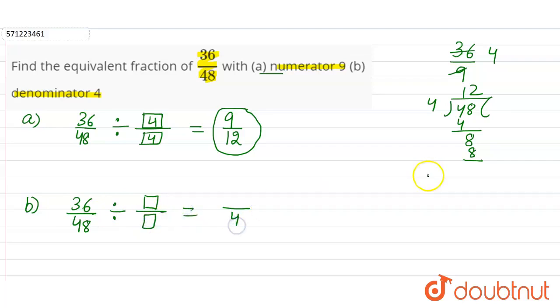This time we want our denominator to be 4. So for that we have to divide 48 by 4. We know 48 divided by 4 means 12, so we have to divide 48 and 36 by 12. So 36 divided by 12,